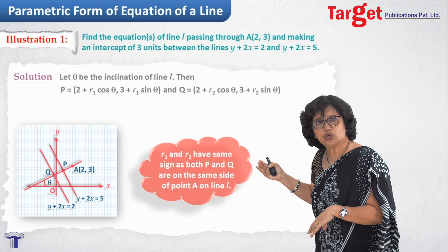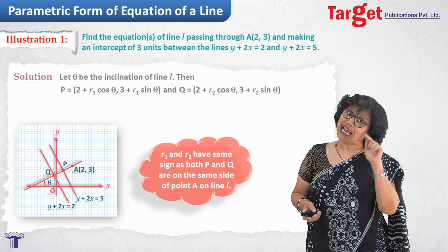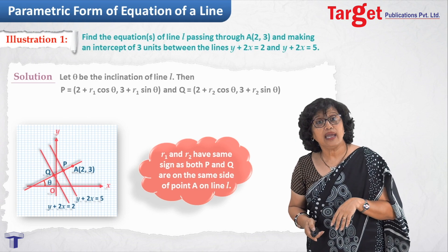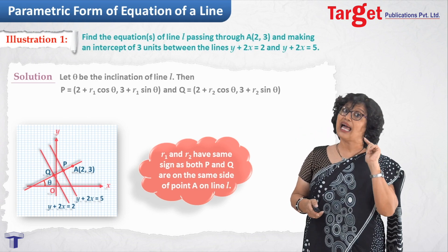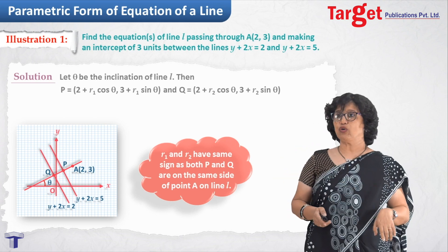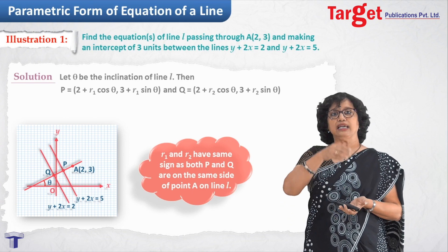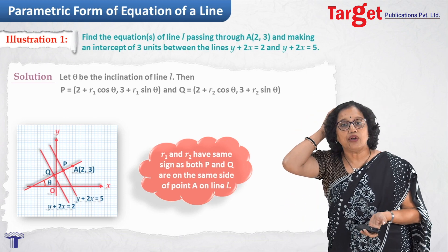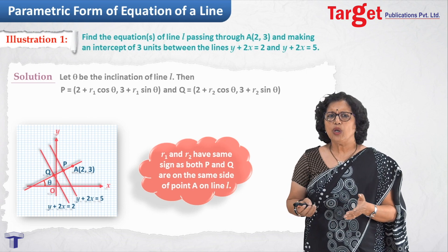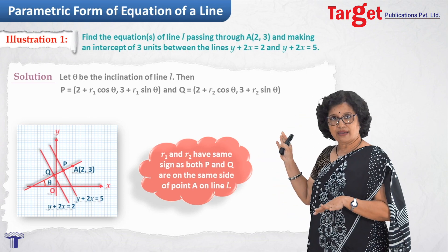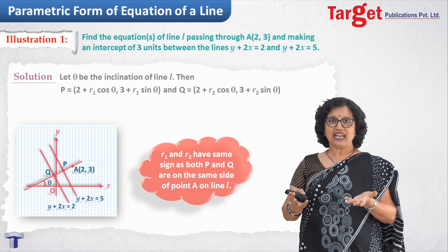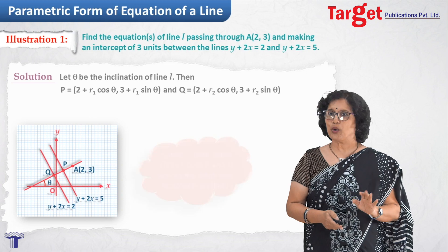Similarly, you can write Q also. Q would be written as 2 plus r2 cos theta and 3 plus r2 sin theta. Now where do P and Q lie? That also has to be seen. They lie on y plus 2x equal to 2 and y plus 2x equal to 5. And some more thing you can see. And that is that r1 and r2 are actually, they will have same sign. Why do I say so? Because they are on the same side of point A. I am just saying right now they have same sign, whether negative or positive we have not yet decided.